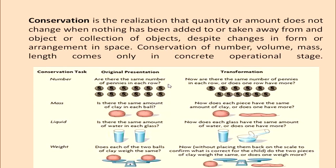Three important mental abilities that develop during the concrete operational period are conservation, classification, and seriation. Conservation is the realization that quantity or amount does not change when nothing has been added to or taken away from an object, despite changes in form or arrangement. Piaget found that children in the pre-operational stage felt that coins spread out in a row are more in number than coins grouped together — they could not do conservation of number, as compared to a child in the concrete operational stage.